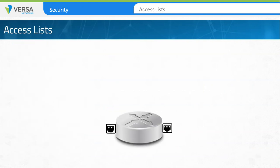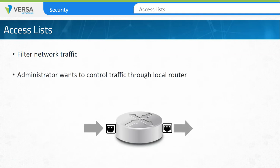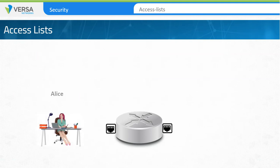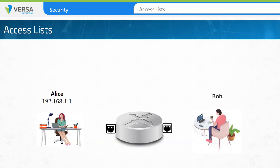Access lists are used to filter network traffic that crosses a routing or security device. They're used when an administrator wants to control access on the local router. The access list is applied to an interface and permits or blocks traffic across that interface. In our example, Alice has a computer with IP address 192.168.1.1 and she wants to communicate with Bob, whose computer has IP address 1.1.1.1. A router uses an access list which provides rules regarding what traffic is permitted to cross the router.